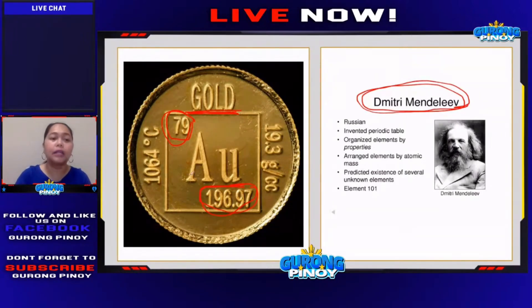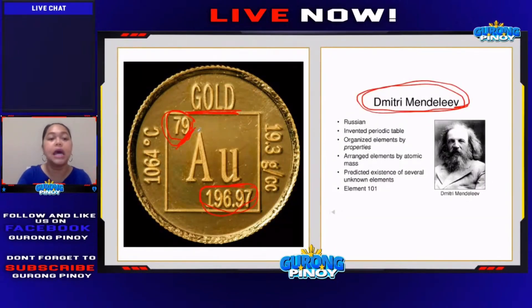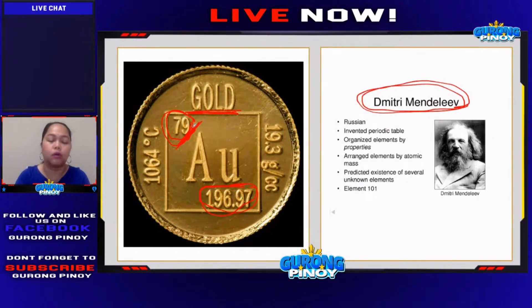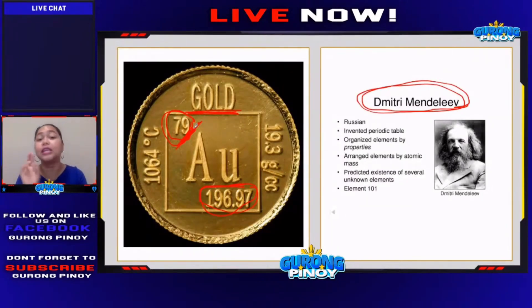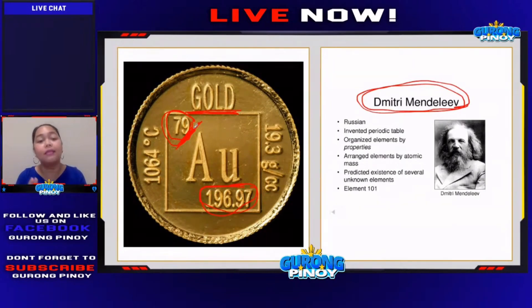When we say atomic number — that is the smaller number, in this case 79 — the higher number is always the atomic mass, which means the other number is your atomic number. Your atomic number is always equal to the number of protons. It is also equal to the number of electrons if your element is not charged, meaning it is a neutral element.